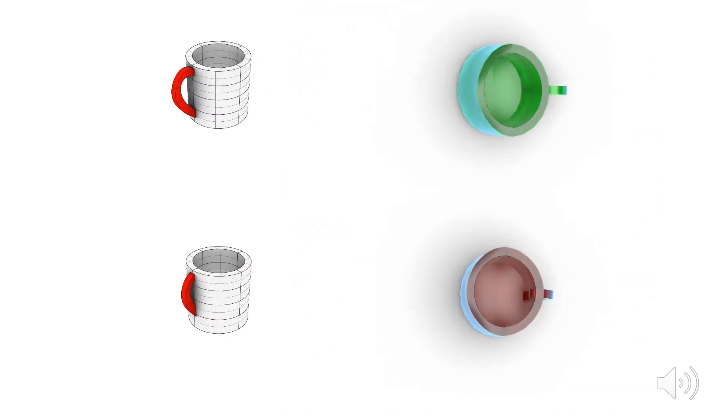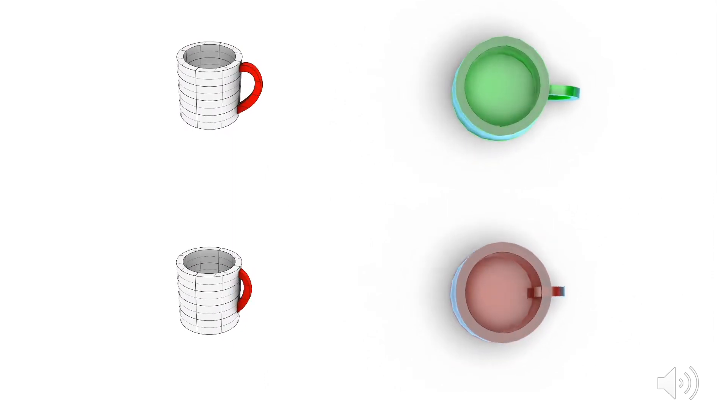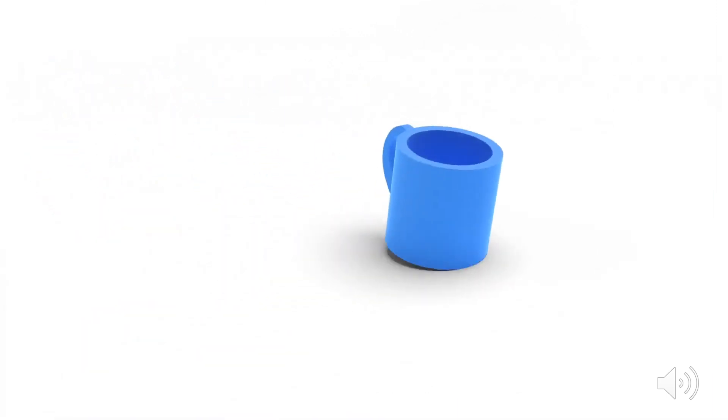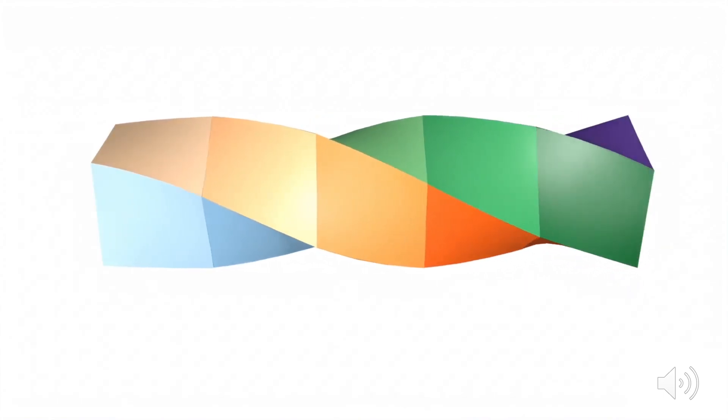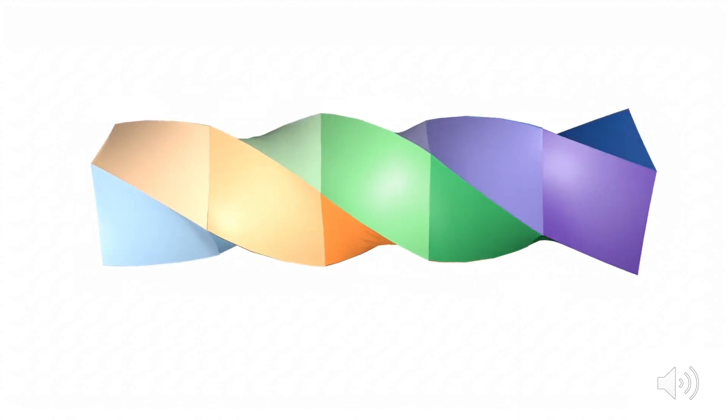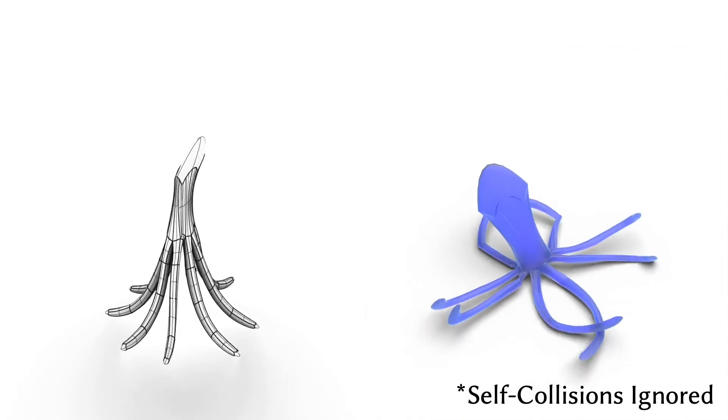Here's the same simulation viewed from above. And if jelly coffee mugs aren't your thing, we've got you covered. Our method supports a variety of material models and parameters, which allows us to robustly simulate large deformations like this twisting beam.